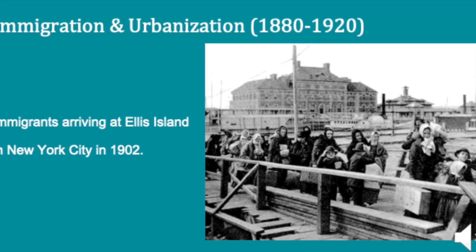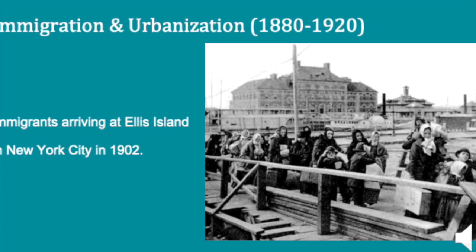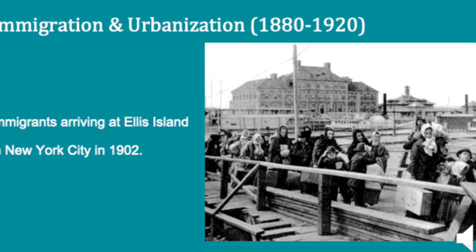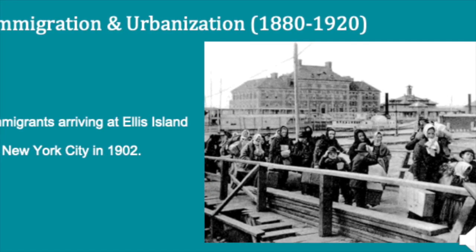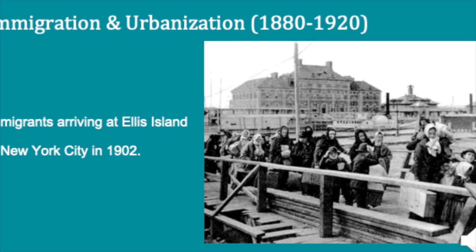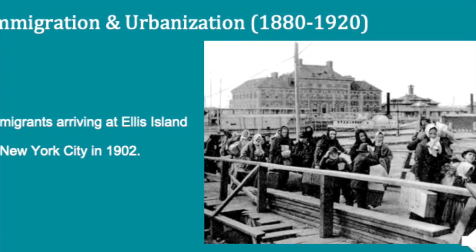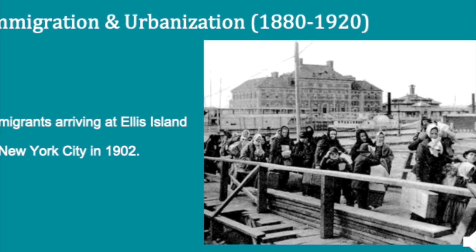Not only were new immigrants settling in urban areas, Americans from rural areas were also increasingly moving to cities in search of economic opportunities and, in some cases, an escape from the boredom and isolation of rural life. The influx of people caused the size of American cities to grow rapidly in the late 19th century, and high demand for housing meant that there were few good options for new arrivals.